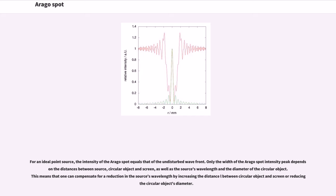For an ideal point source, the intensity of the Arago spot equals that of the undisturbed wavefront. Only the width of the Arago spot intensity peak depends on the distances between source, circular object and screen, as well as the source's wavelength and the diameter of the circular object.